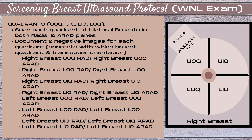For these negative images for each quadrant, you're going to annotate which breast you're in, which quadrant you're in, and your transducer orientation. For instance, for the right breast I would start with right breast upper outer quadrant radial, then right breast upper outer quadrant antiradial, then move to right breast lower outer quadrant radial and right breast lower outer quadrant antiradial. Go through all the quadrants documenting your two negative images for each quadrant, then switch over to the opposite breast.